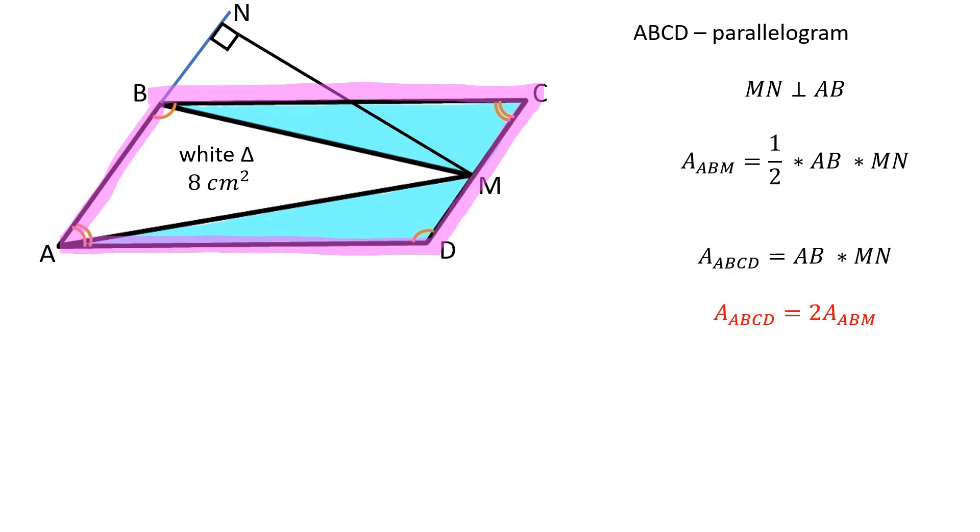Therefore, the area of ABCD is equal to 2 times the area of triangle ABM, which is equal to 16 cm squared.